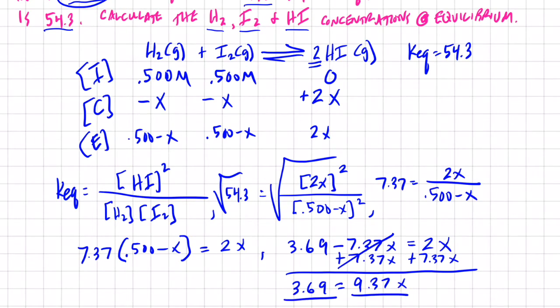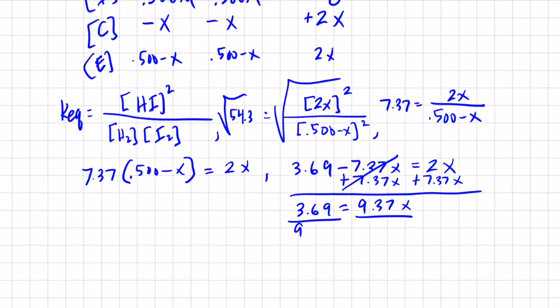So if we divide both sides by 9.37, we end up with X. So 3.69 divided by 9.37, that gives us 0.394. 0.394 equals our X.